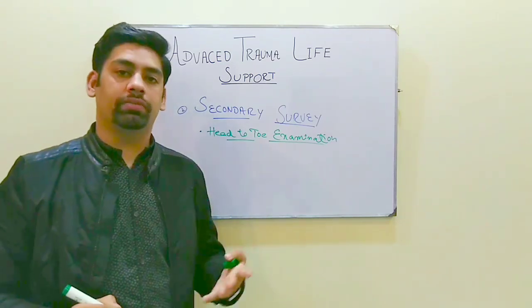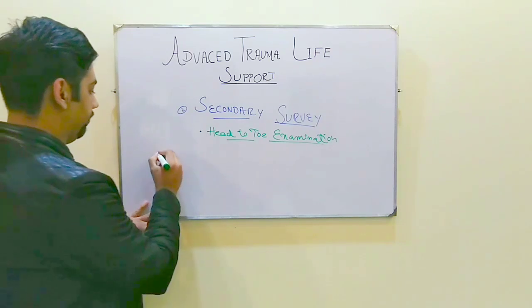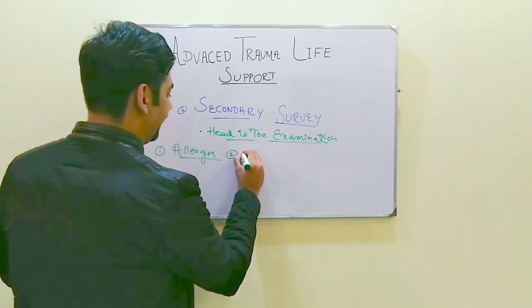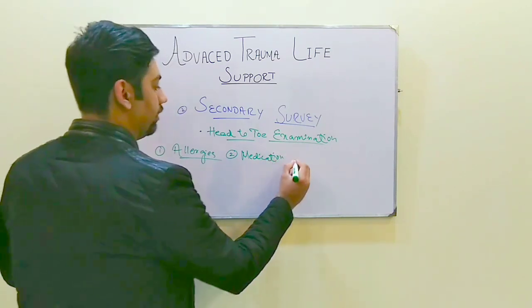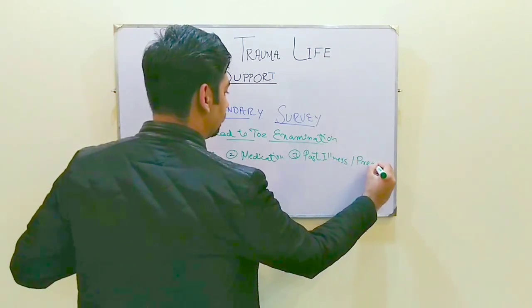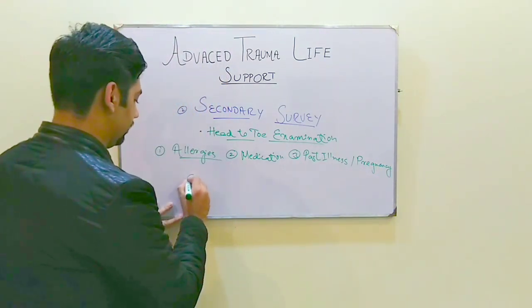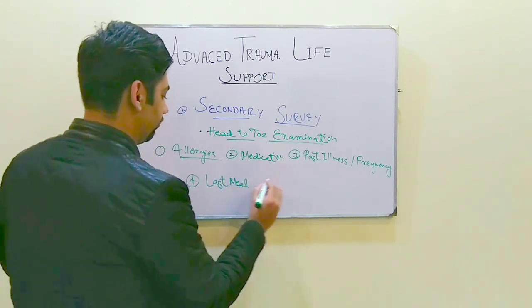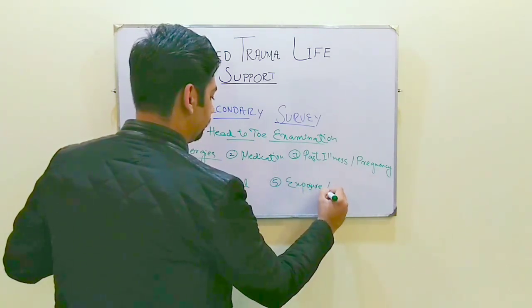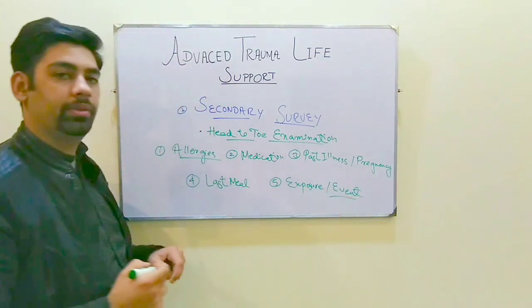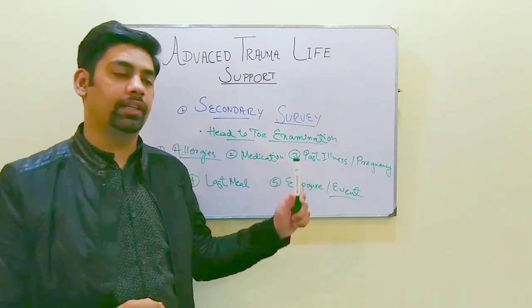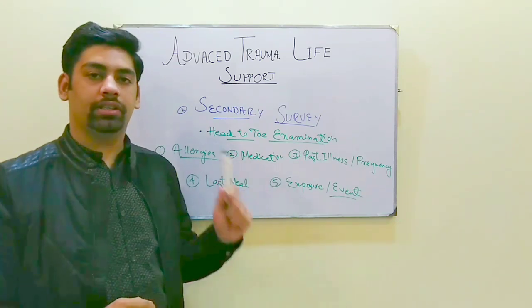In the secondary survey, there are also five components which need to be addressed. The first one is allergies, the second is medication, the third is past illness or pregnancy, the fourth is last meal, and the fifth is exposure — referring to the exposure or event surrounding the injury.